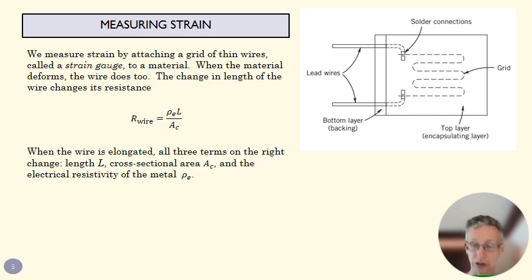If I stretch out a wire, it's going to have a smaller cross-sectional area. And this is the resistivity of a particular metal, so this is a material component. All three of these change if I put that wire under strain.